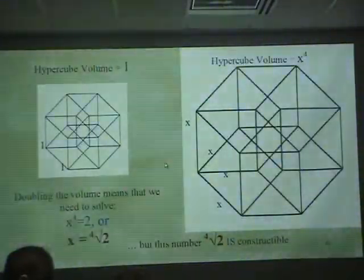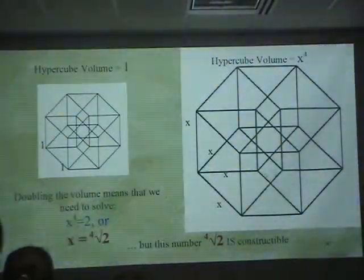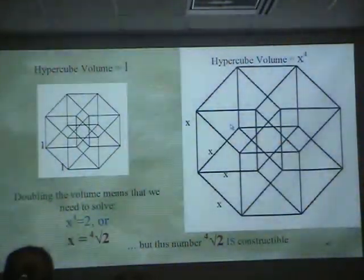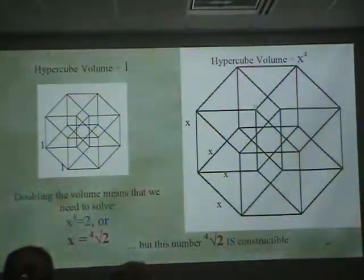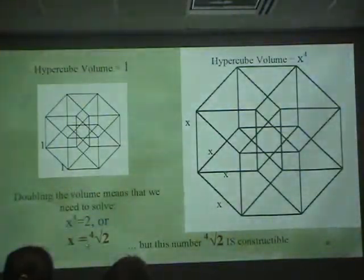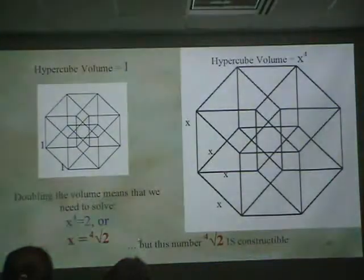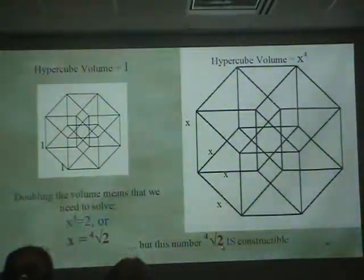So that's a hypercube — that's what a hypercube looks like. To double the volume of a hypercube means you have to find the fourth root of two. But the funny thing is that, from Euclidean construction, the fourth root of two is constructible.